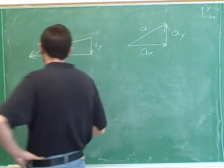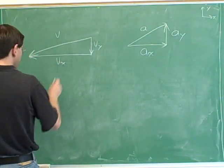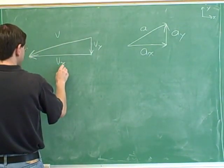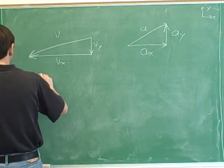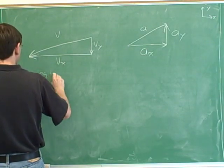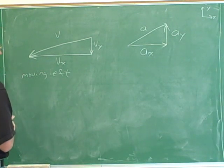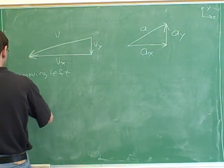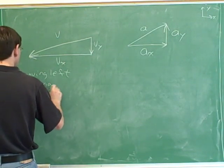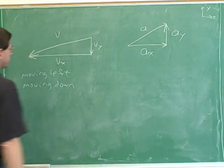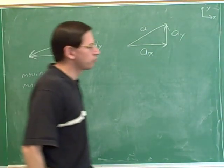Now our interpretations. The velocities tell us which way we're moving. The horizontal velocity is left, so we're moving left. And the vertical velocity is down, so we're moving down and to the left. This object is moving down and to the left.